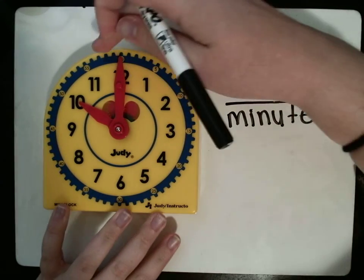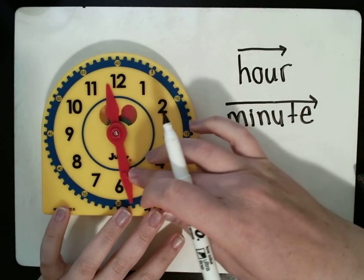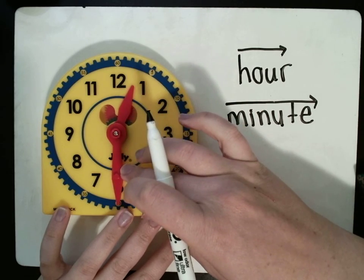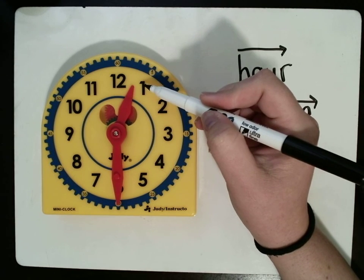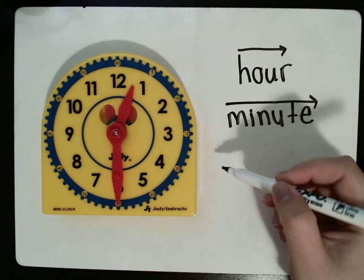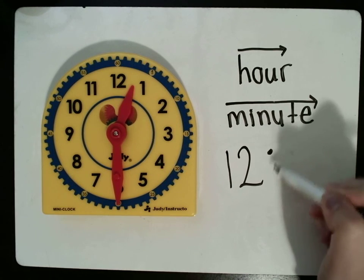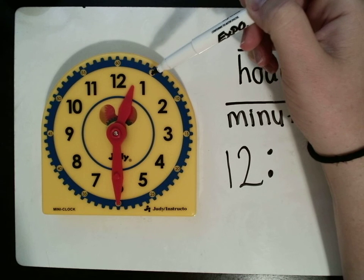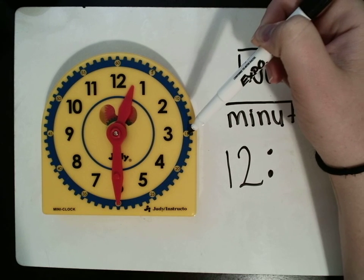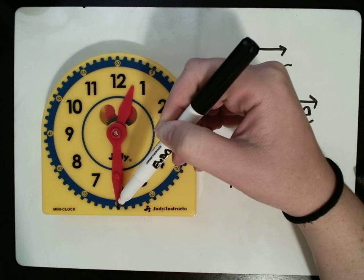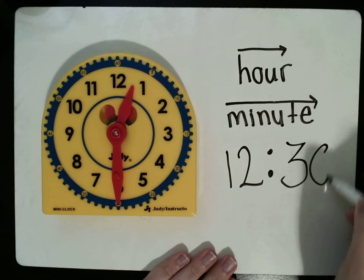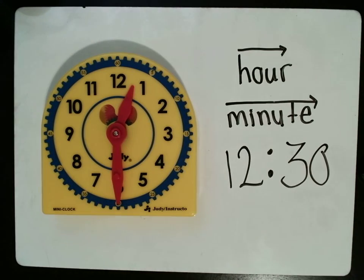All right. We'll do one more. We'll do this right here. So, again, look at your hour hand. It's between the 12 and the 1. It's not on the 1 yet. So, it's not 1 o'clock. It is still 12. Let's count our minutes. We have 5, 10, 15, 20, 25, 30. So, it is 12:30. That minute hand has gone halfway around the clock, which is why the hour hand is halfway between the 12 and the 1.